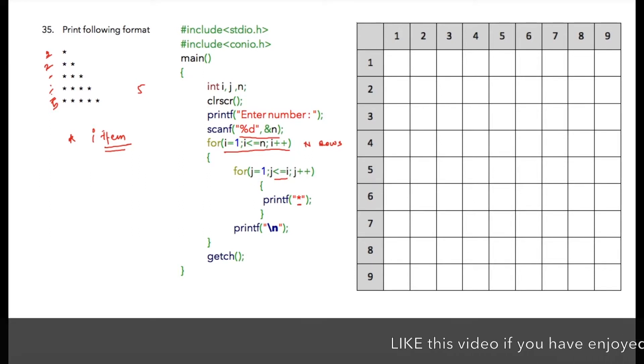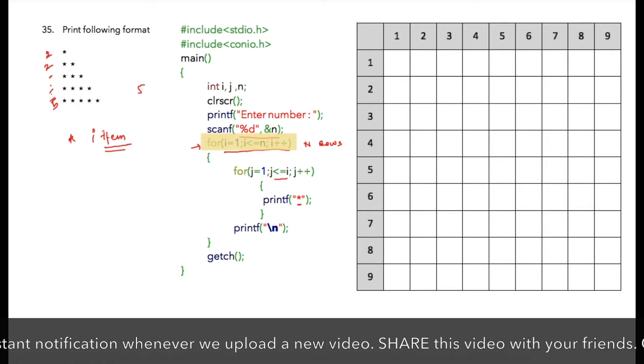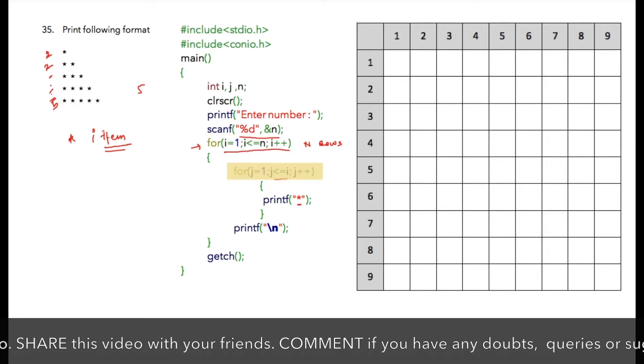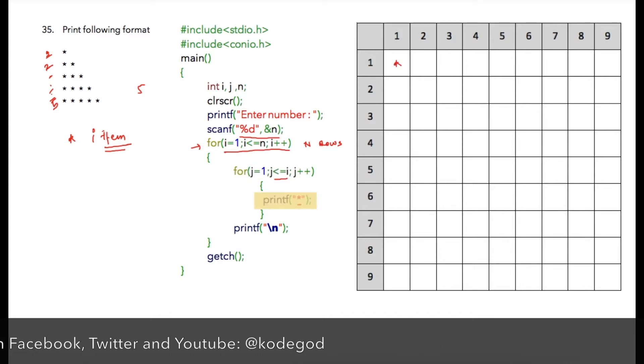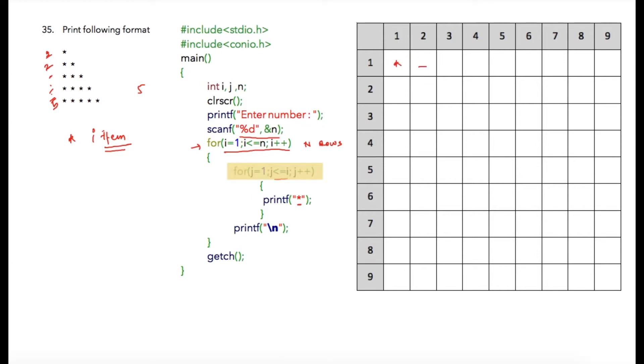Assuming the user has entered five, initially i is one. The condition is true - one is less than five. In the second for loop, j is equal to one and it will continue iterations till j becomes greater than i. So one is less than or equal to one, it will print a star and the cursor will move to the next display unit. Now j will be incremented to two and the condition will become false because two is not less than or equal to one, so this for loop will be terminated.